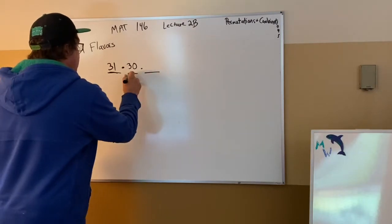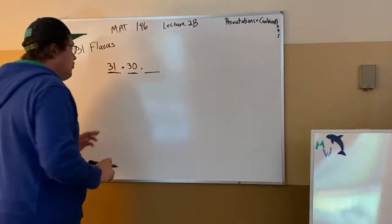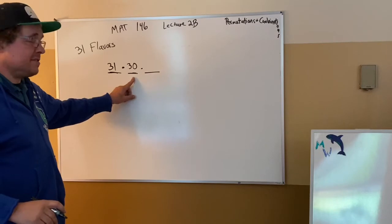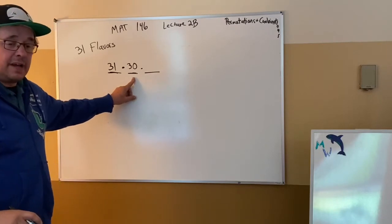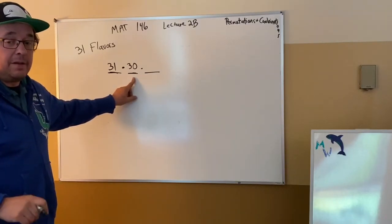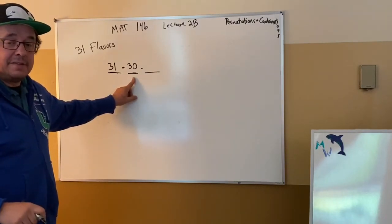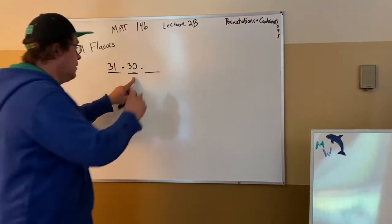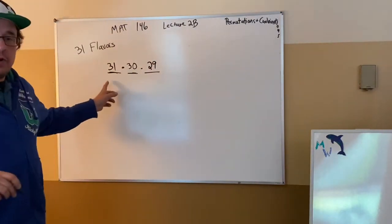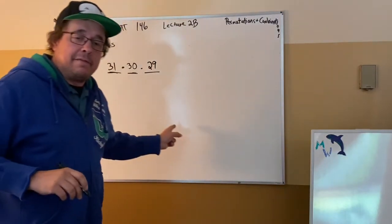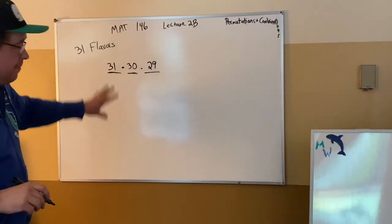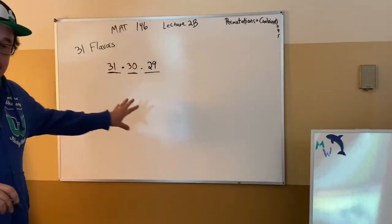The first flavor goes right onto the cone. The second flavor goes onto the first scoop and must be a different flavor, so it can't be one of 31 — one of them is gone. 31 minus 1 is why we put 30 here. When we go back for the third scoop, it can't be the same as the first or second. But there are still many flavors available. When fully loaded, we multiply those together.